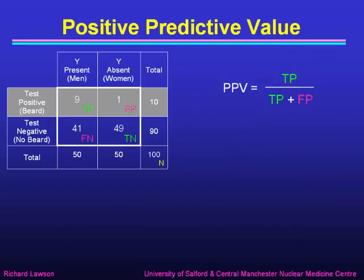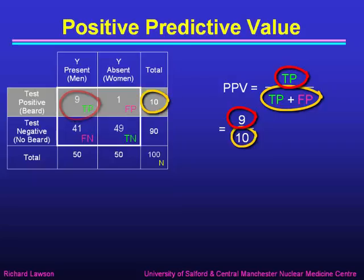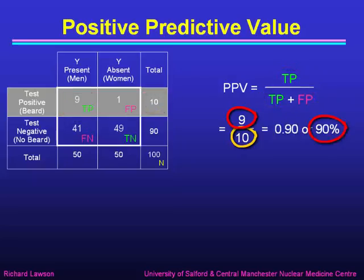Now let's introduce some more quantities. Positive predictive value is defined as the true positives as a fraction of the true positives plus the false positives. In other words, it looks at the numbers in the first row. Remember, sensitivity and specificity looked at the columns; now positive predictive value looks at the rows. So in this example, it's true positives — which is 9 — as a fraction of the total in that row, which is 10. 9 out of 10 is 0.9 or 90%.